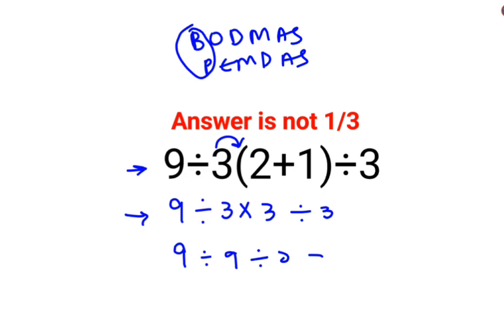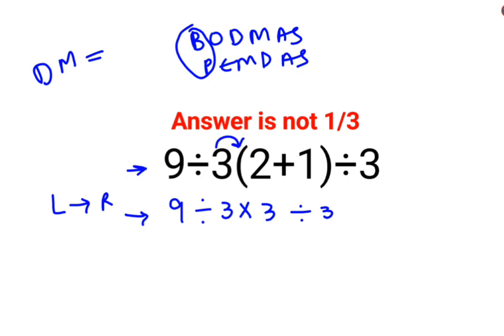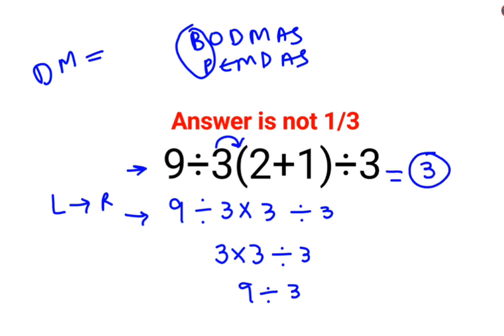In mathematics, you need to realize there are certain rules you need to follow always. Division and multiplication hold equal precedence, so you go from left to right while solving these kinds of sums. 9 divided by 3 is 3, multiplied by 3, divided by 3 — 3 multiplied by 3 is 9, divided by 3. So the answer for this question is 3. I hope this is very clear to everyone.